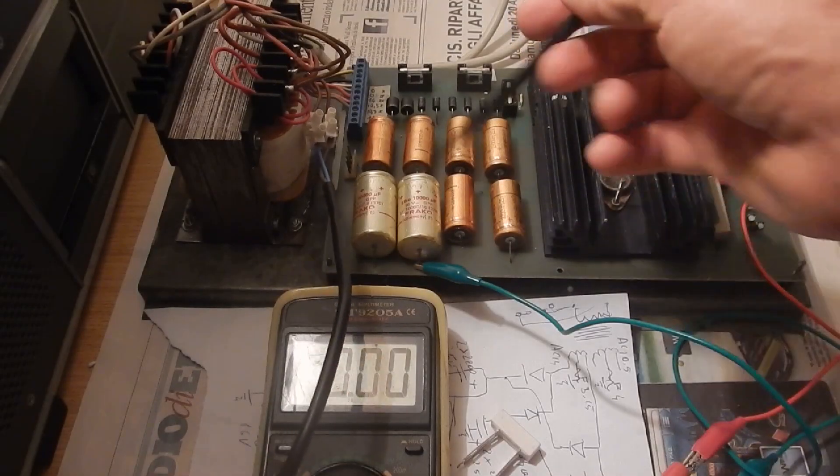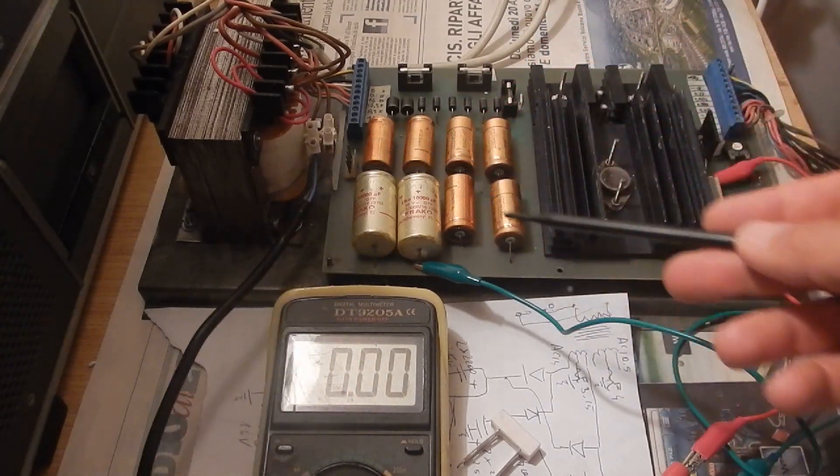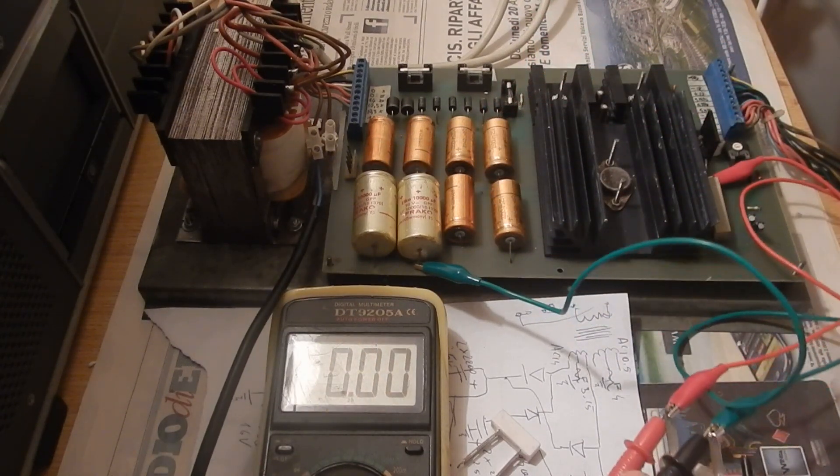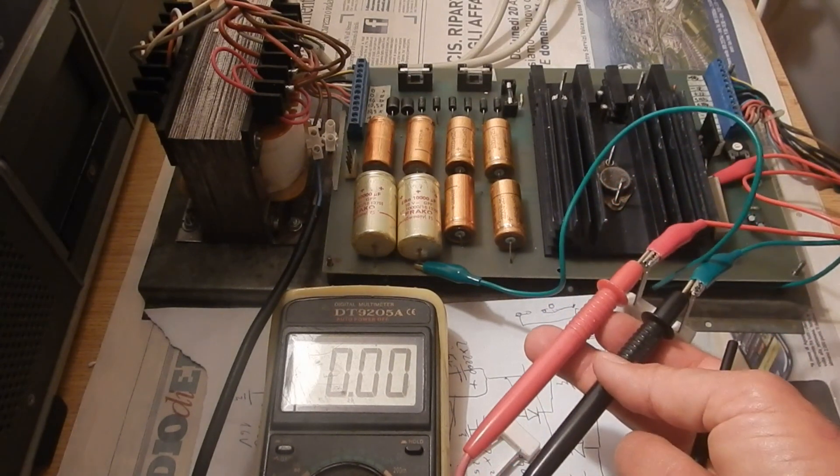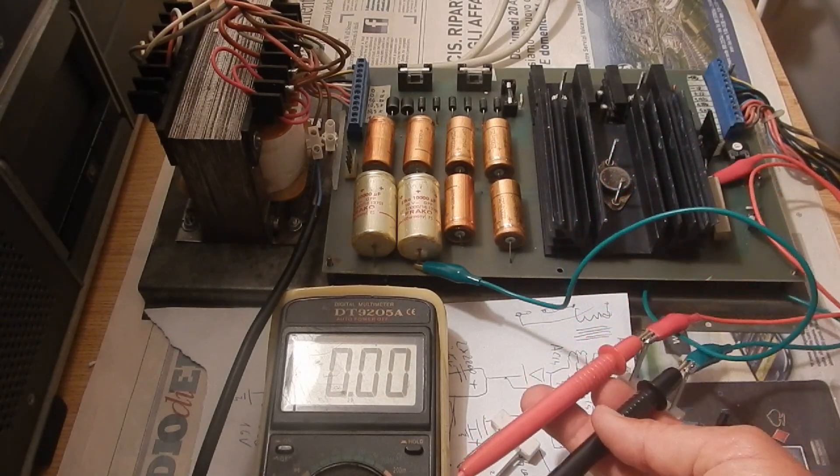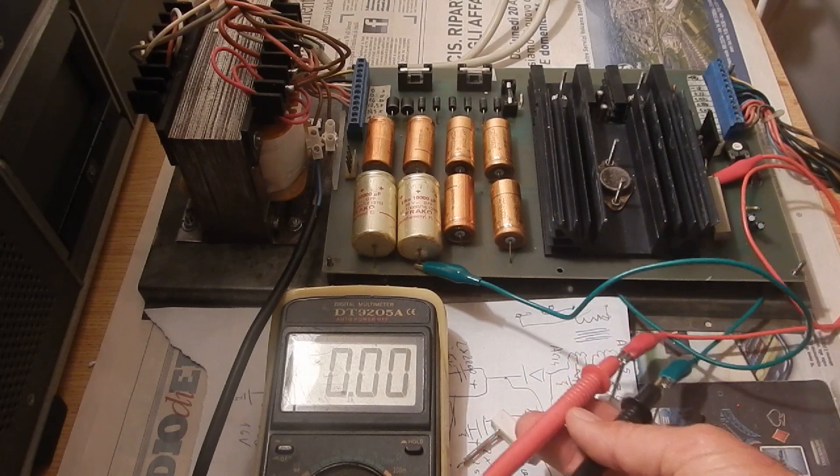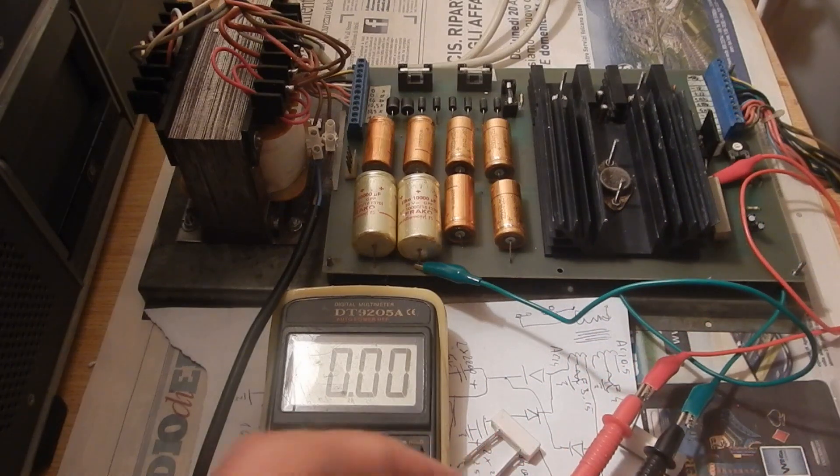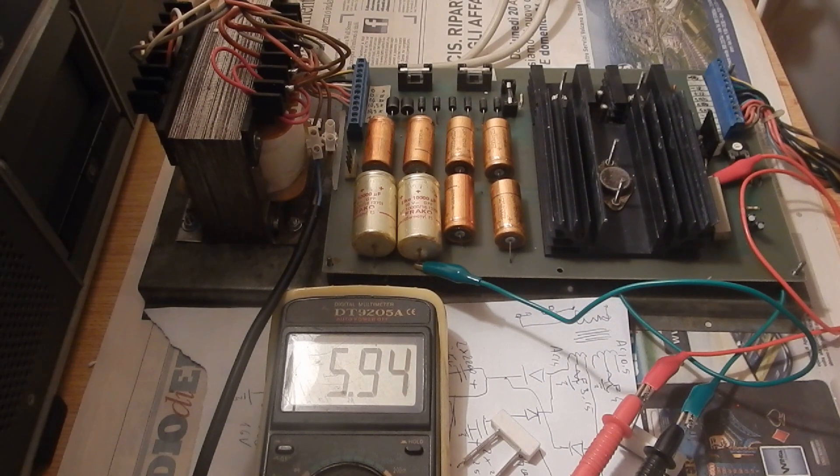OK, AC is connected to the transformer primary. And I have connected only one 5.6 Ohms load resistor. That's to demonstrate that with insufficient load, the output voltage is indeed higher than the rated one.